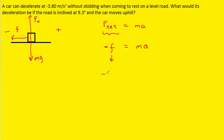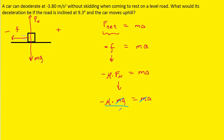The frictional force can be substituted with the coefficient of friction times the normal force. And the normal force, if we go back to the free body diagram, is equal in magnitude to the gravitational force. So we can plug in mg for the normal force. Mass then appears on both sides of the equation, so we can cancel it out by dividing both sides by m.